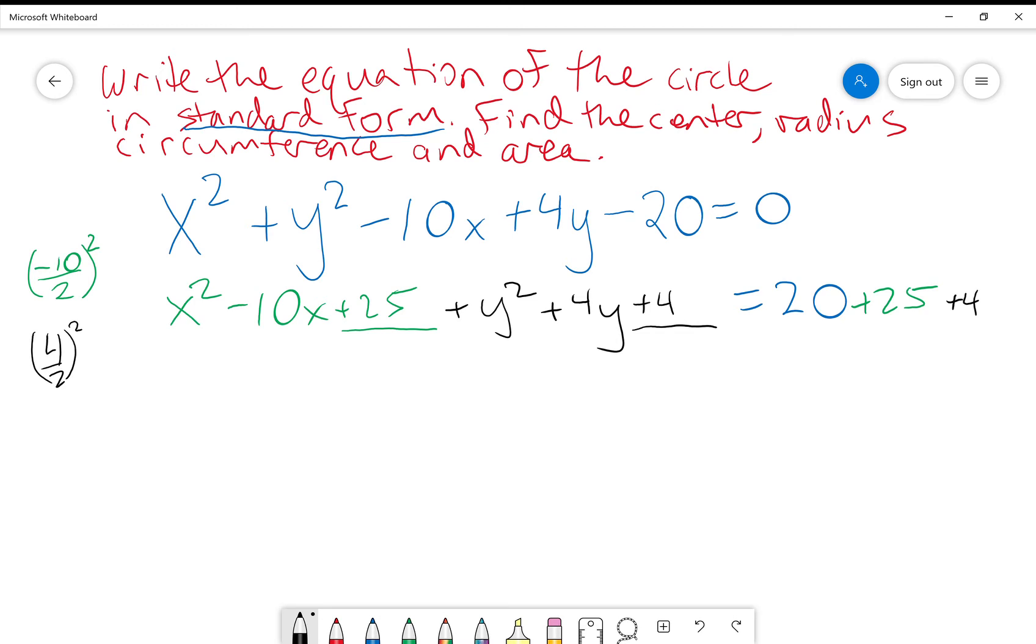Alright, so now what we want to do is we want to do a little bit of factoring. Well, this one will factor down to x minus 5 squared, because what multiplies to 25 and adds to negative 10? Well, negative 5 and negative 5. So x minus 5 times x minus 5, or written much nicer, x minus 5 squared.